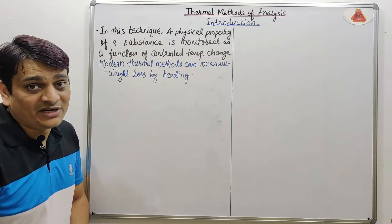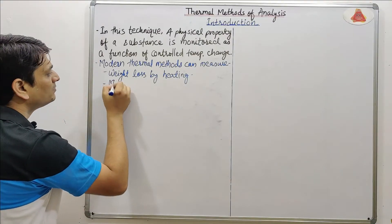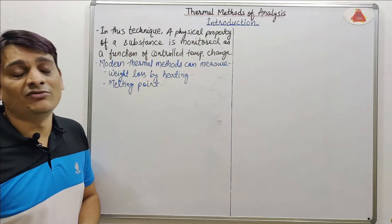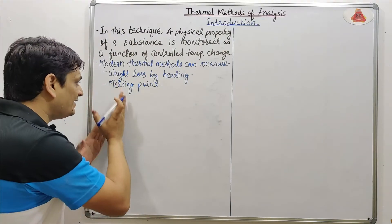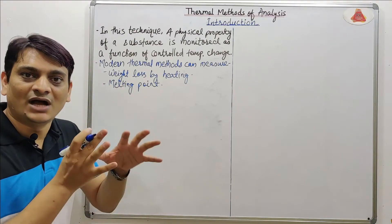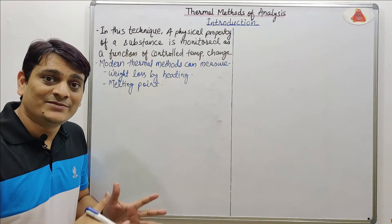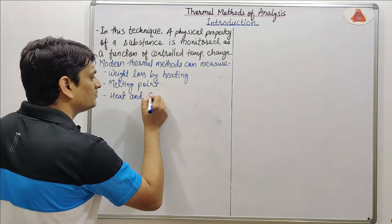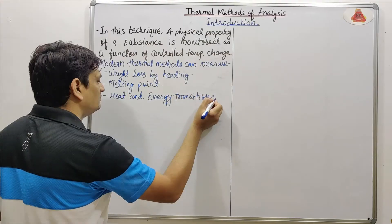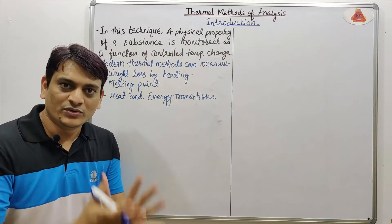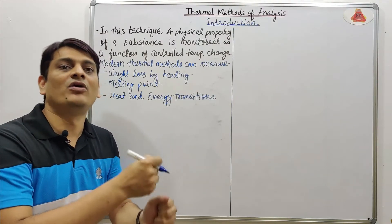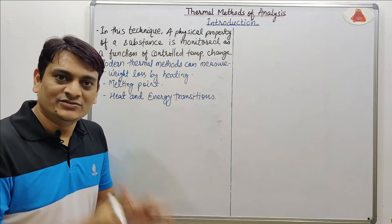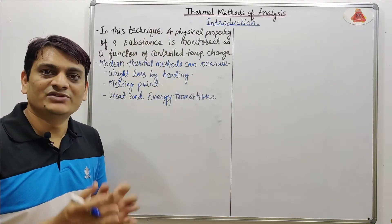Coming to the second parameter, that is melting point. By using these thermal techniques we can also determine the melting point of that particular sample or substance, and the melting point is also a physical property of a substance. The third property is heat and energy transitions. In any sample, if any heat or energy transitions take place, that is also a change in the physical property, and those properties can also be measured by using these thermal methods.